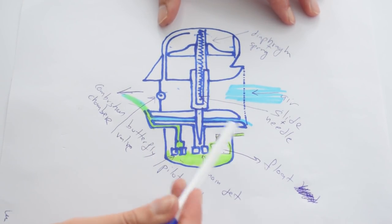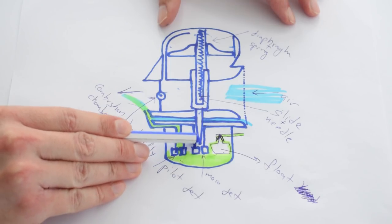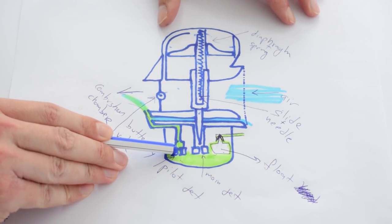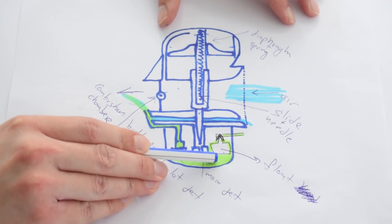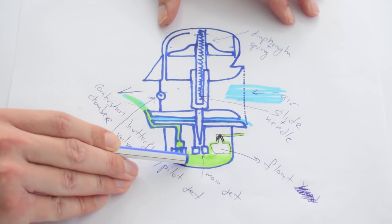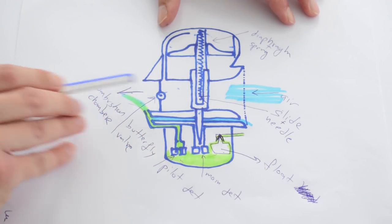Inside the float bowl we also have our main jet which is right here and our pilot jet. The main jet and pilot jet are basically holes through which fuel flows and goes into the carburettor.